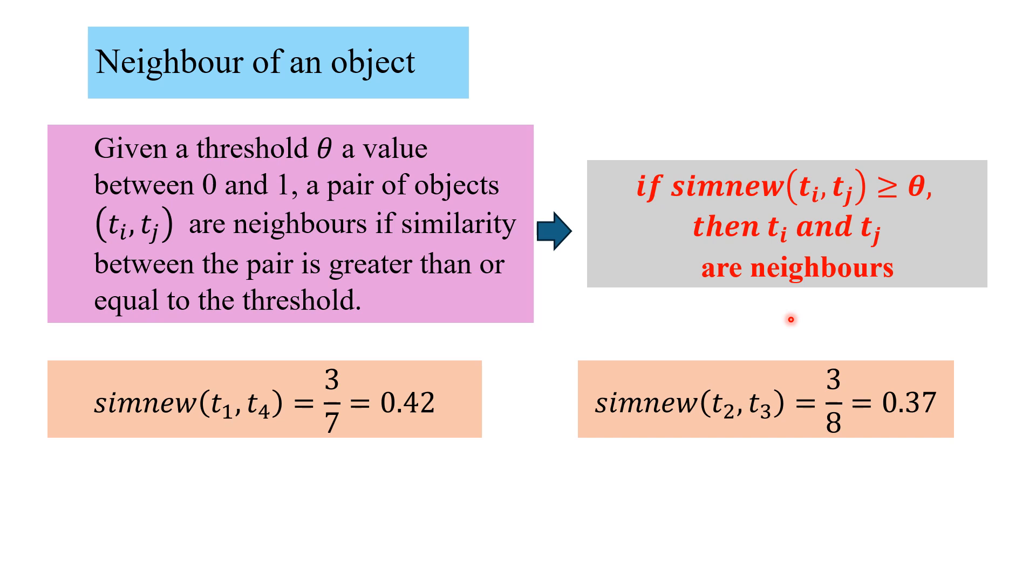For the previous slide, 3 by 7 is 0.42 and this is 0.37. If theta is 0.4, then t1, t4 are neighbors while t2, t3 are not, because this value is less than 0.4.